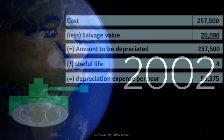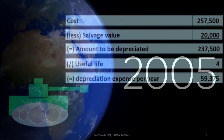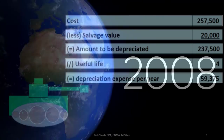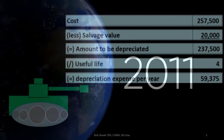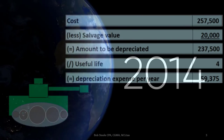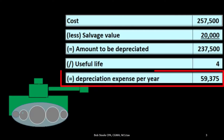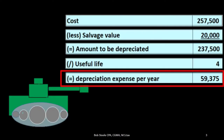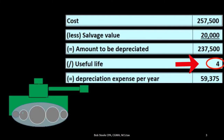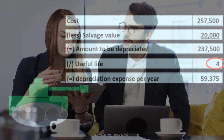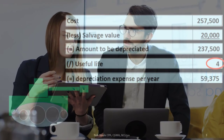We would then divide that by four years to give us a yearly depreciation of $59,375. At some point after the first year, it could be that we have new information and we believe that these estimates are not accurate anymore. For example, we might say that four years is not applicable — it might be less or more based on information that has emerged.